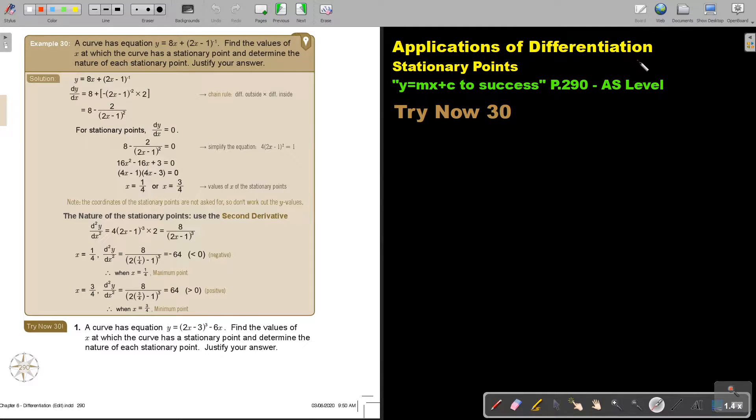Applications of differentiation. We are going to continue with stationary points. You will find this on page 290 in the Namibia AS level mathematics textbook Y equals MX plus C to success. Let's look at another example. A curve has equation, and this is the function. Find values of X - this is very important - find the values of X, not the whole coordinate point, at which the curve has stationary points and determine the nature of each stationary point. Justify your answer.